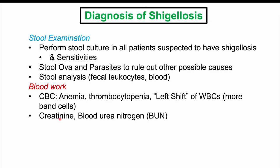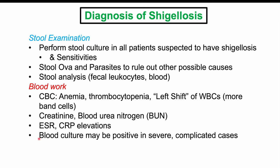Creatinine and blood urea nitrogen may be elevated in cases of dehydration. Increases in ESR and CRP can also be found. Blood culture may be positive for the bacteria in severe and complicated cases.